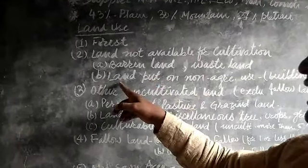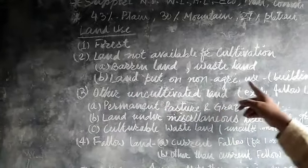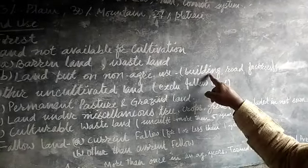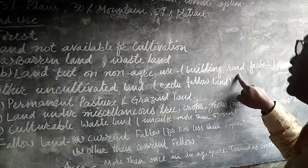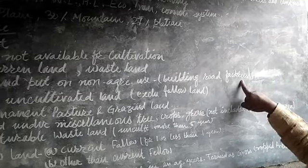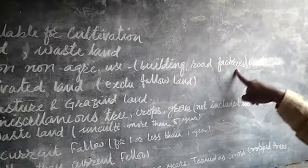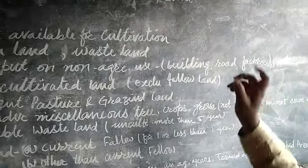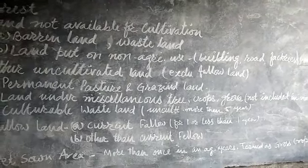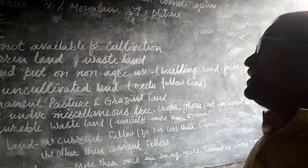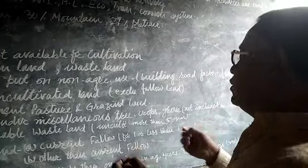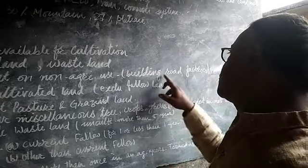Third category is land put to non-agricultural use, meaning many parts of land used for buildings, construction of roads, and factories. Such land is not used for agricultural purposes, but we can use land resources for this purpose as well.